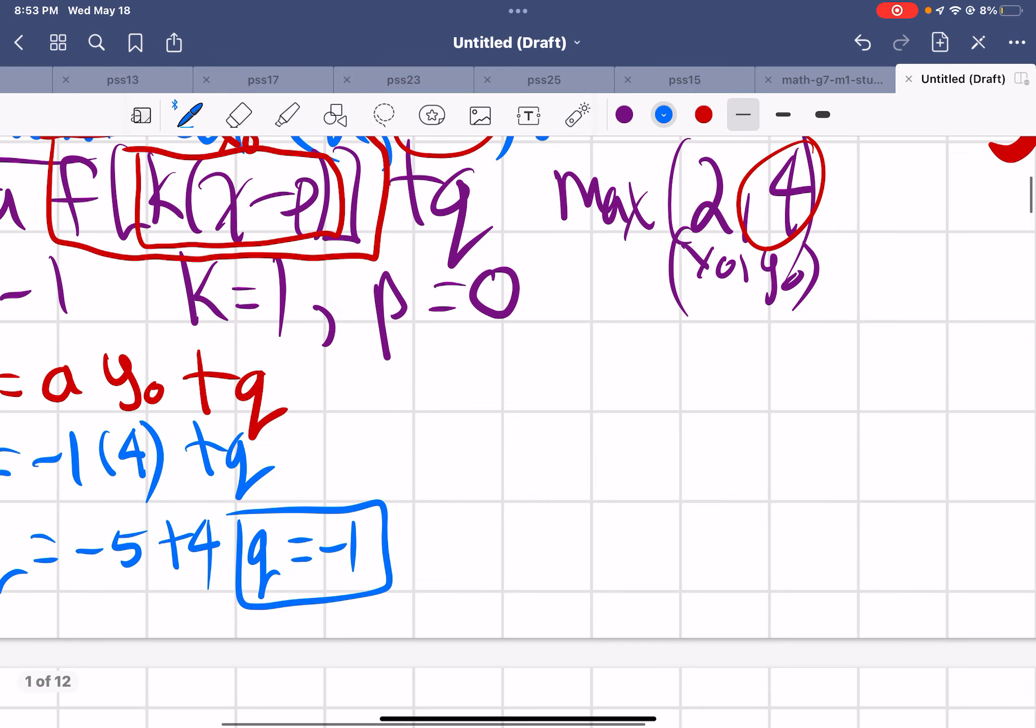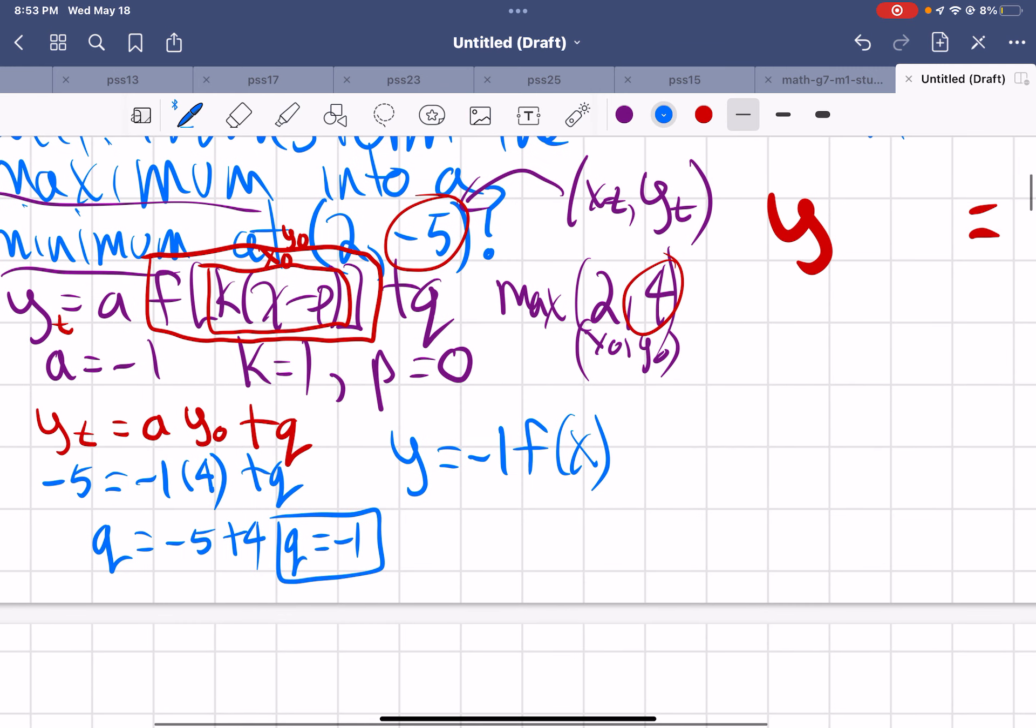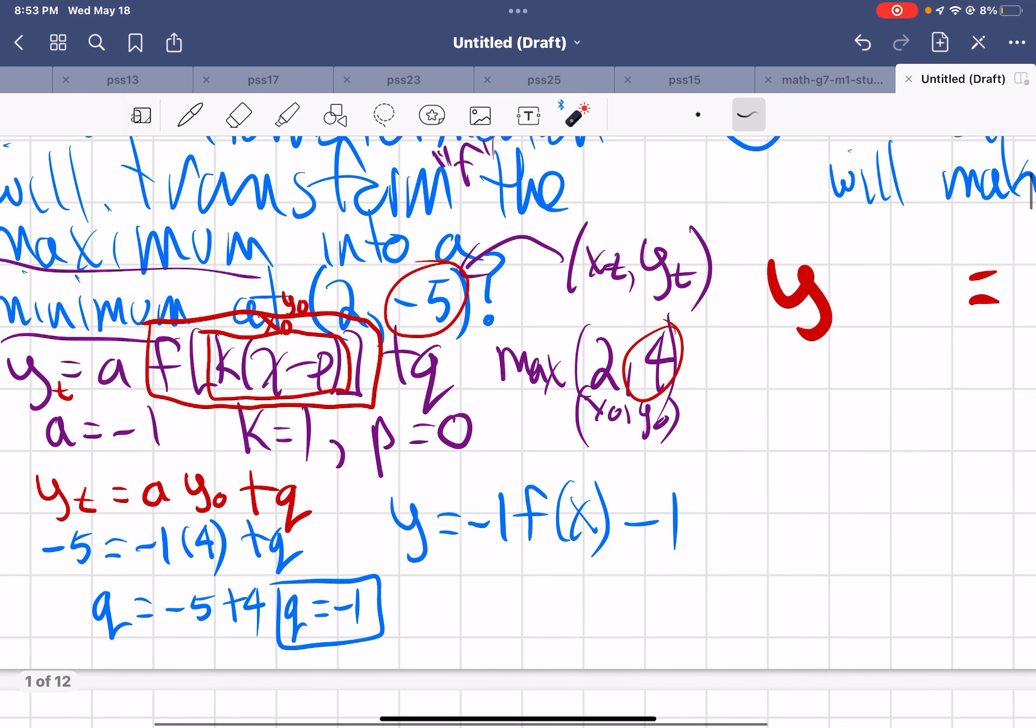So the final equation is going to be Y equals, A is negative 1, F of X. There's no change at all to X minus 1. So now I can check and see if I'm right. So I can do that.